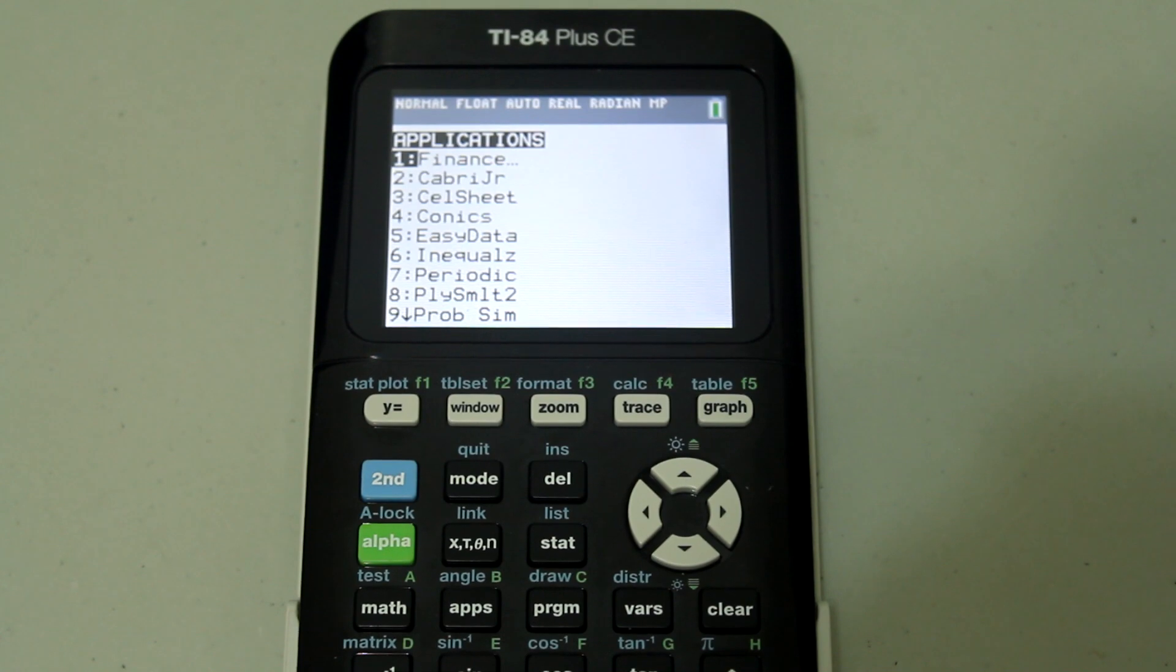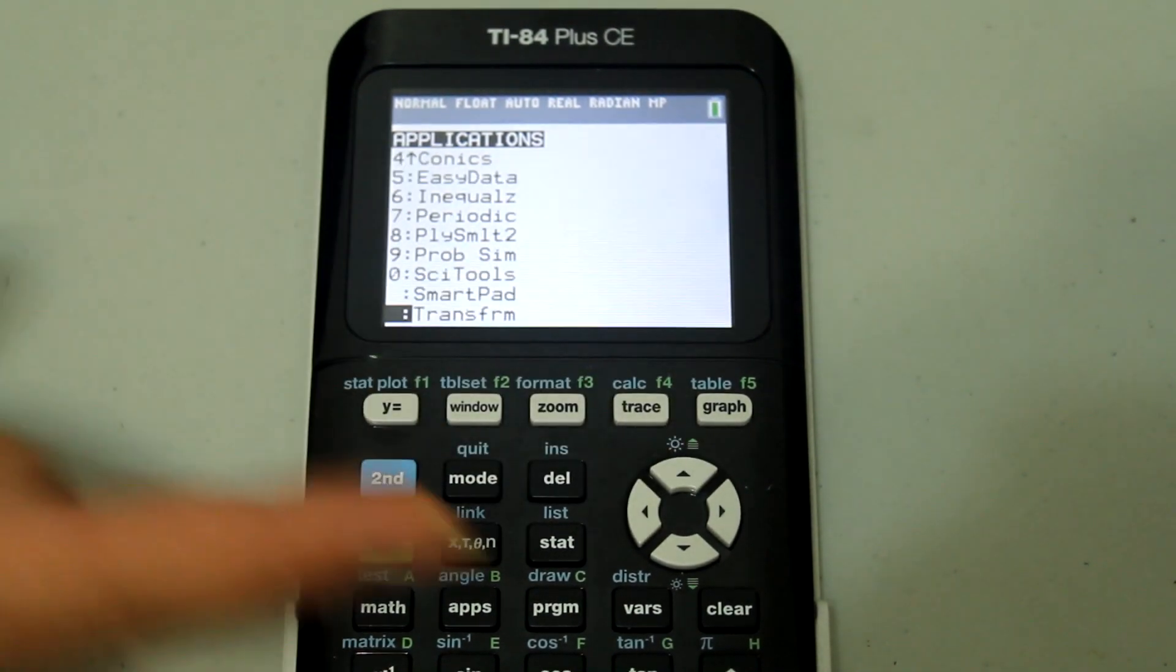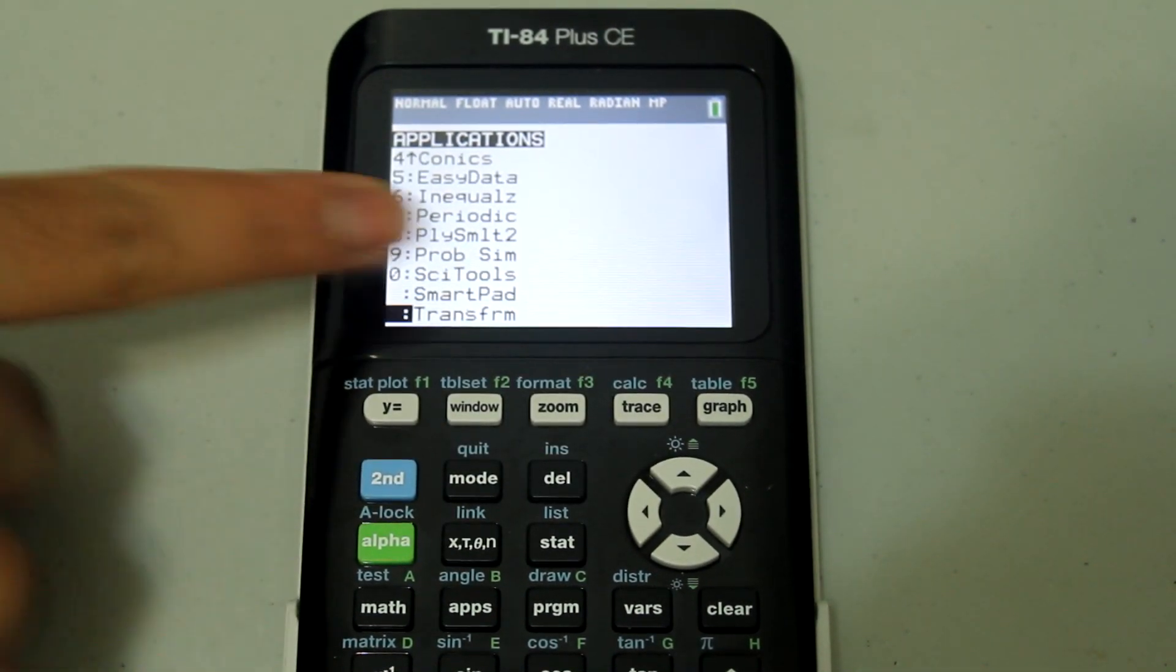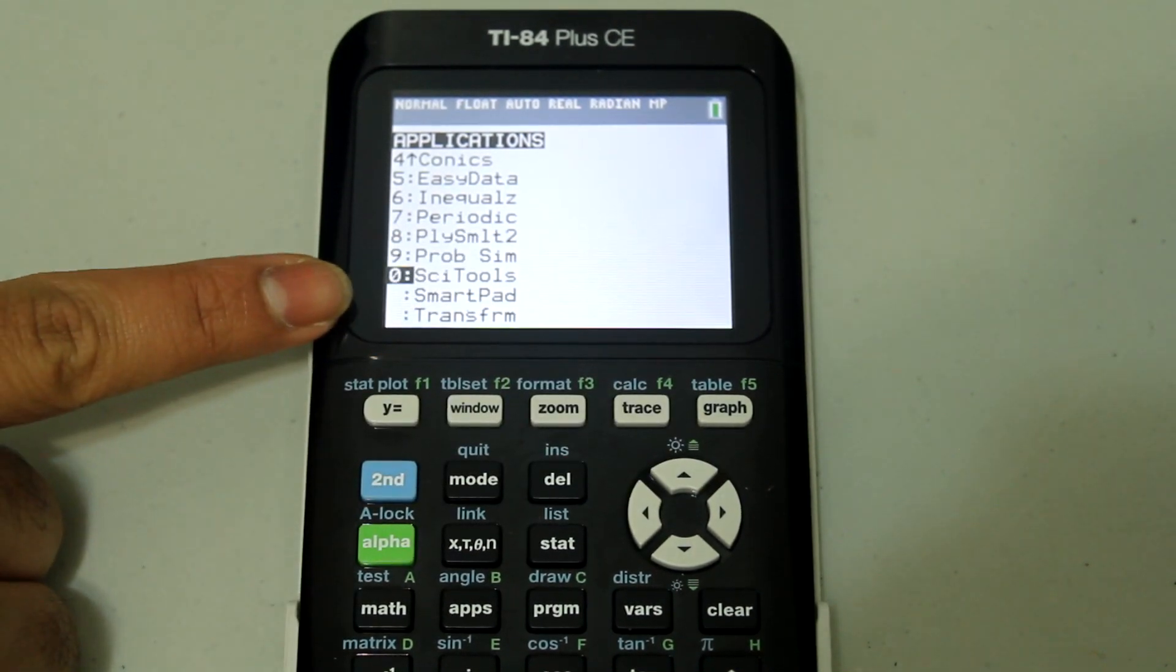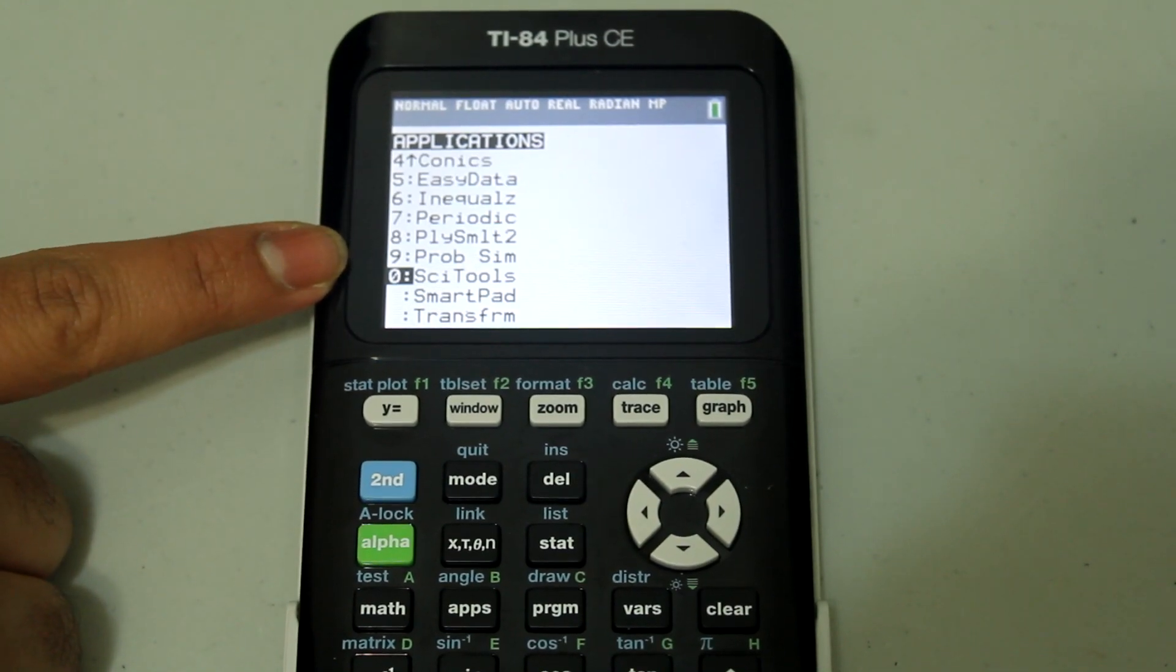Afterwards, we want to press the up arrow to scroll in reverse because the feature we're interested in is further down the list, so scroll up to the tool that says Science Tools and once the cursor is next to that, press enter.